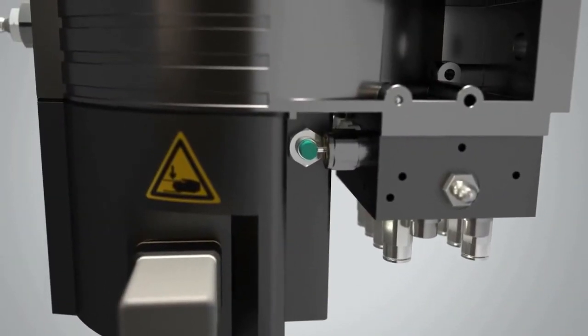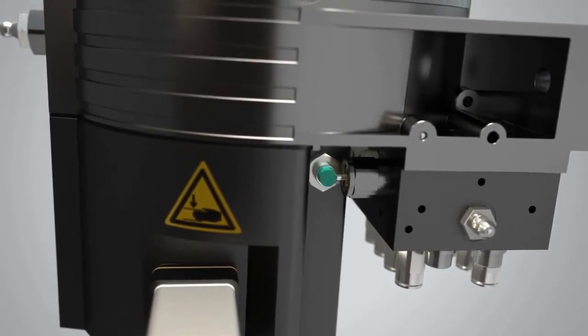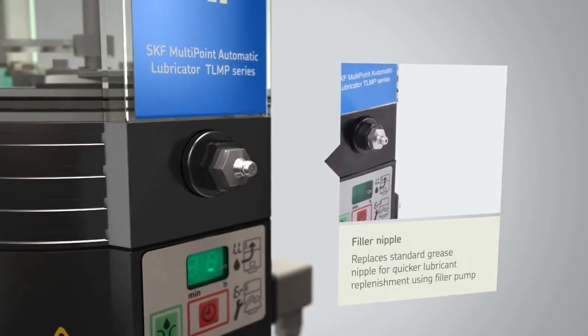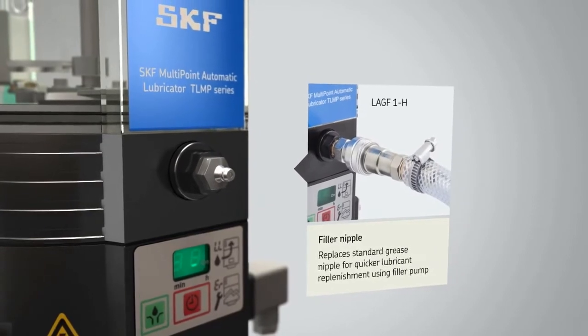The unit cycle control sensor ensures that every outlet is receiving the right amount of lubricant. The TLMP is equipped with a grease nipple but an optional filler nipple is available for easy lubricant replenishment using a filler pump.